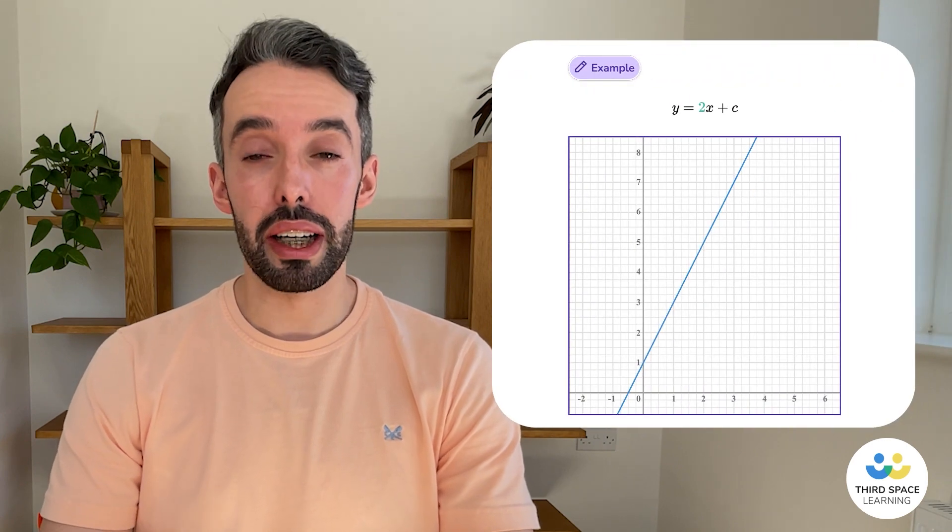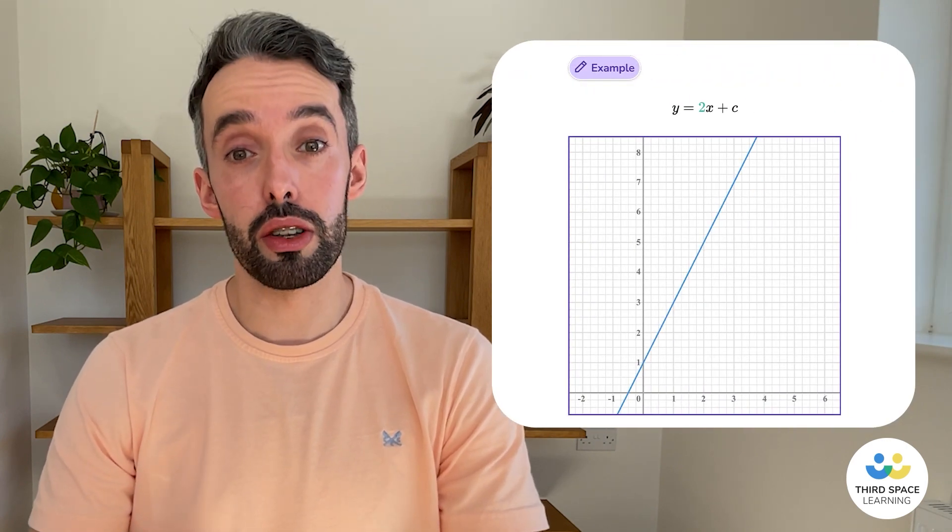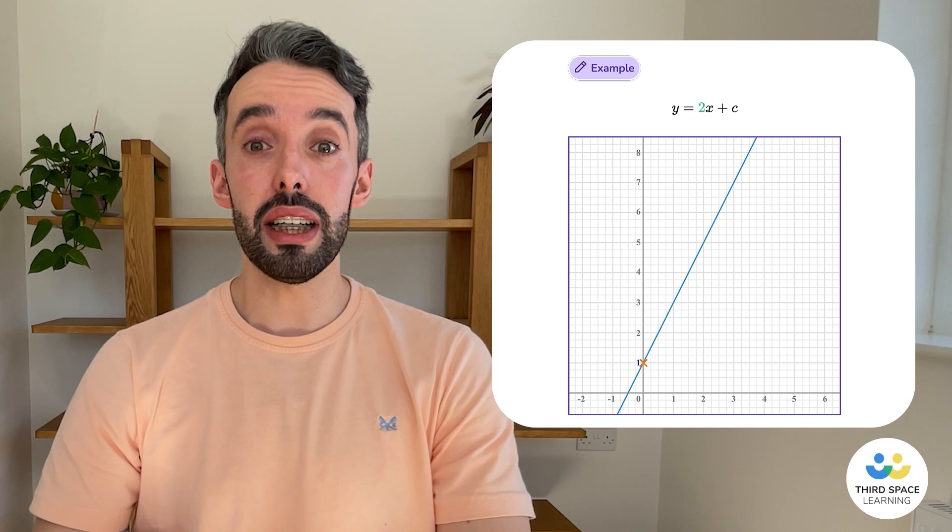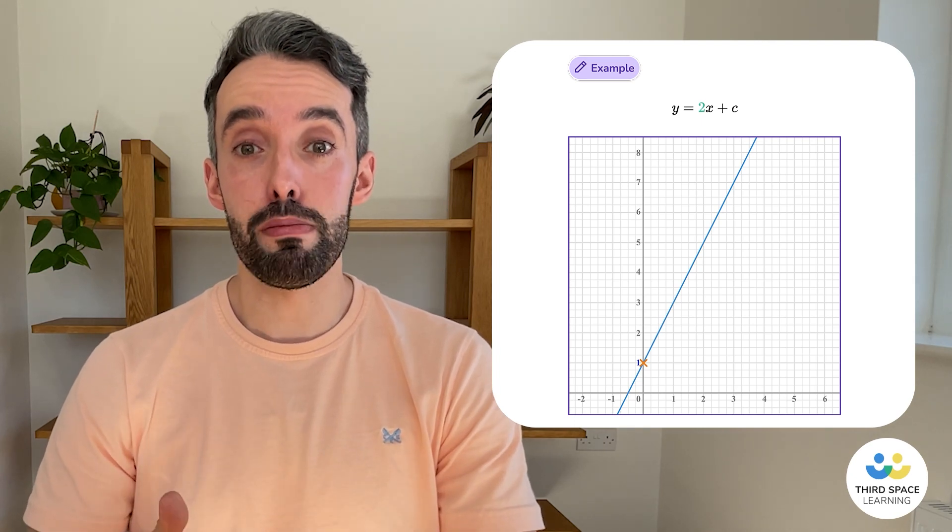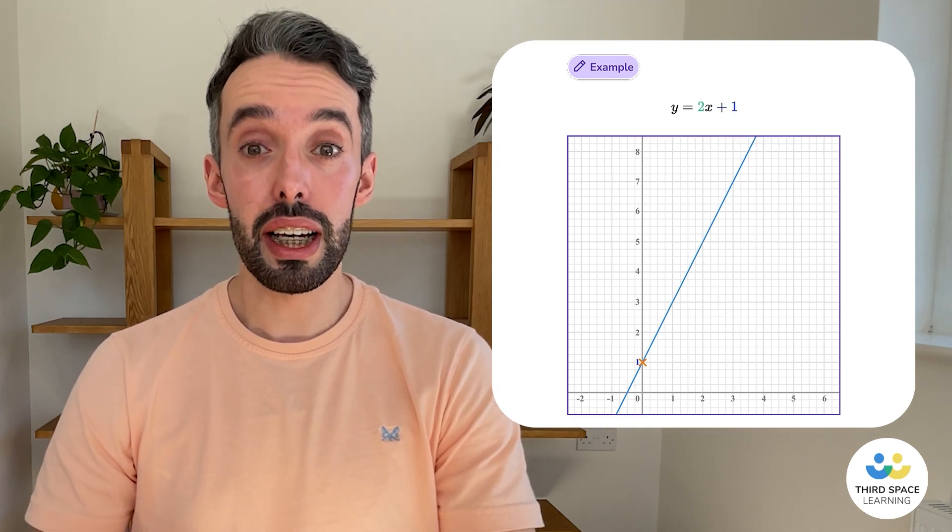Next, let's work out c. Now, c is the y-intercept, which is where it crosses the y-axis. And we can see that it crosses the y-axis at positive 1. So, c is positive 1.